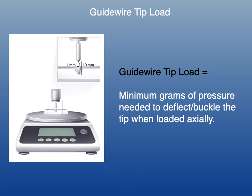One concept many people are not as familiar with as they think is guide wire tip load. Guide wire tip load is the minimum grams of pressure needed to deflect or buckle the distal one centimeter of a guide wire by two millimeters. Guide wires are made with low tip loads ranging around four grams, all the way up to 25 or 30 grams.